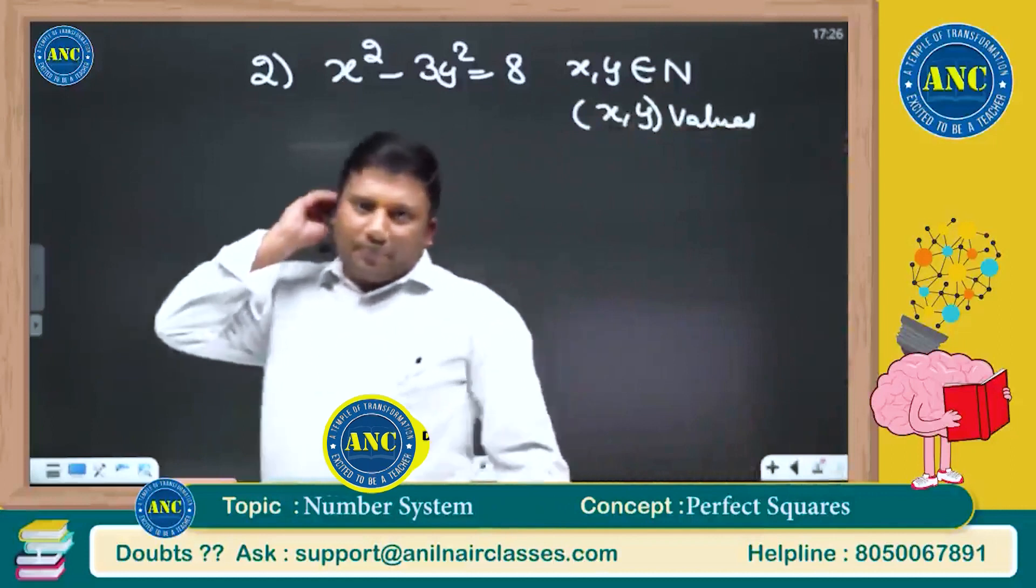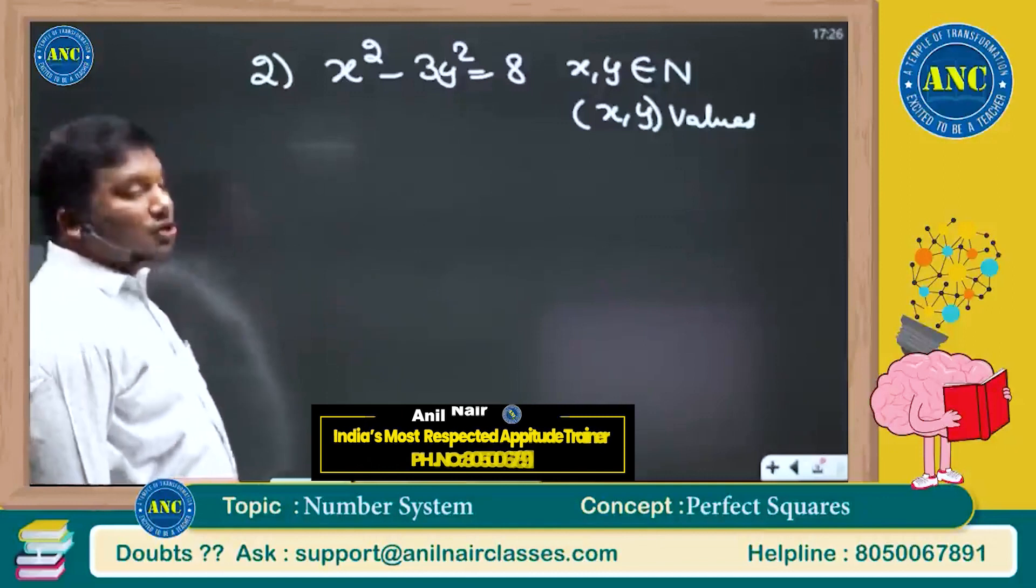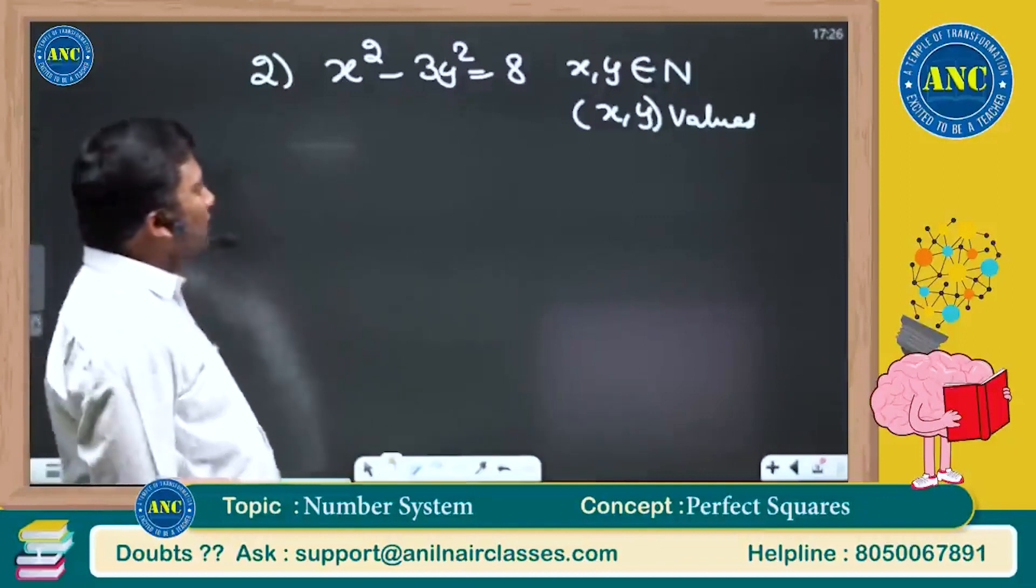Please write down the next question: x square minus 3y square equivalent to 8, x, y are natural numbers. How many values x, y will take?